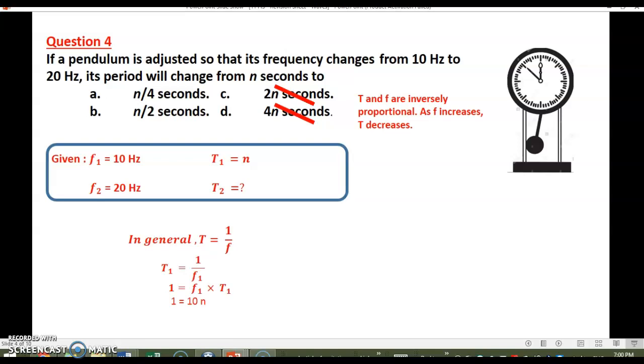Now for the special case for the initial state T1 equals 1 over f1. Doing a cross multiplication means that 1 is equal to T1 times f1. Doing the substitution f1 equals 10, T1 equals n. So we get that 1 is equal to 10n.